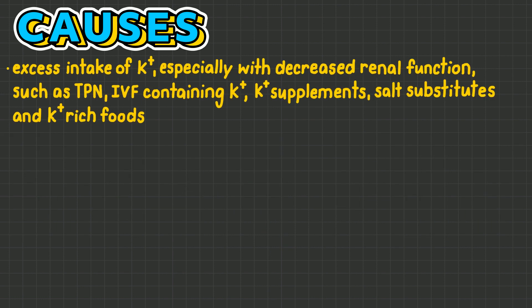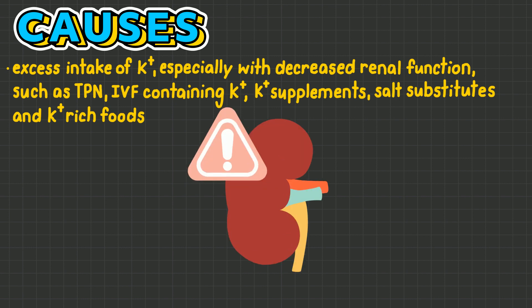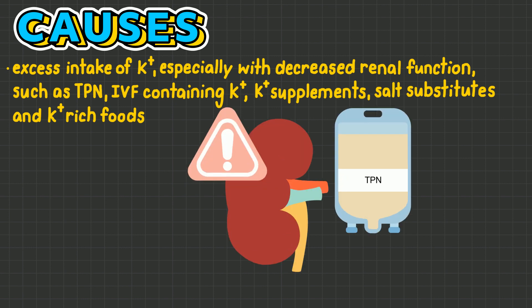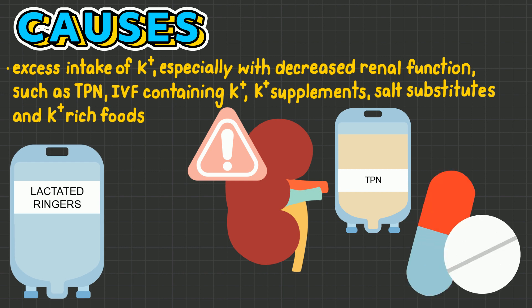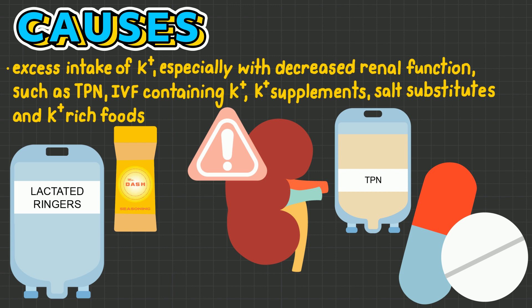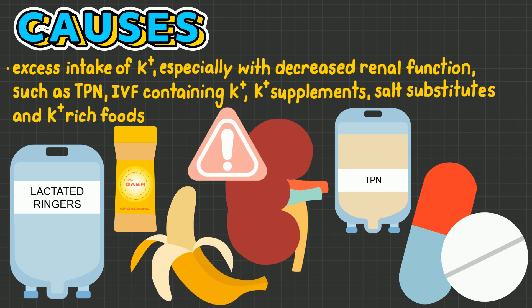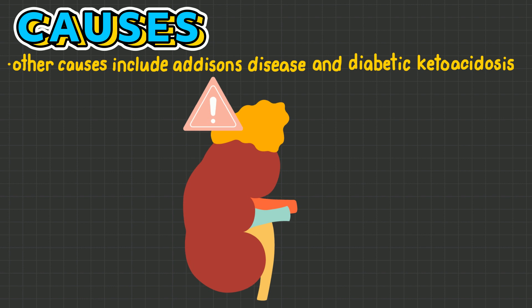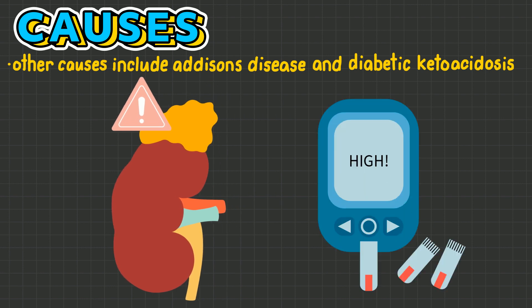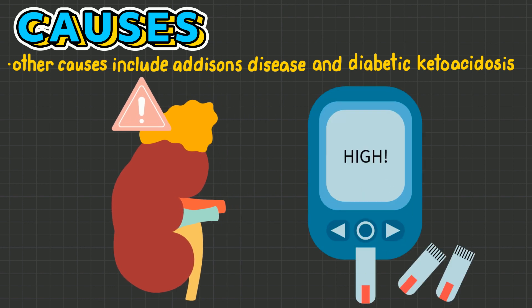Excessive intake of potassium, especially in the presence of decreased renal function — such as through TPN, IV fluid containing potassium, potassium supplements, salt substitutes, and foods rich in potassium — can cause hyperkalemia. Other disease processes that may result in hyperkalemia include Addison's disease and diabetic ketoacidosis.